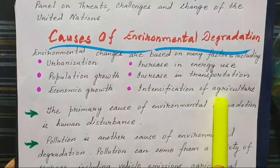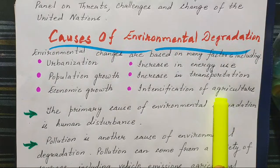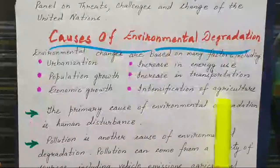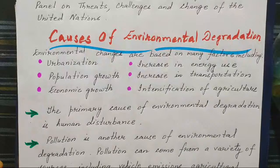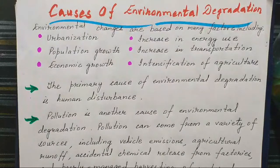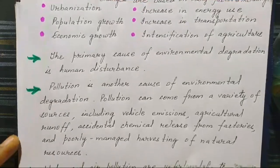Intensification of agriculture is another cause. Farmers use pesticides, insecticides, and chemical fertilizers. Those chemical fertilizers cause land pollution, water pollution, as well as air pollution. The primary cause for environmental degradation is human beings — human disturbance to nature causes environmental degradation.